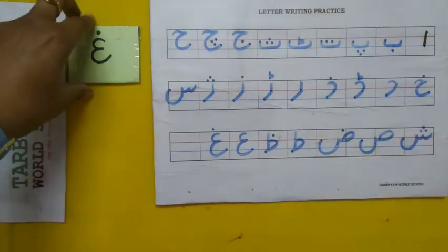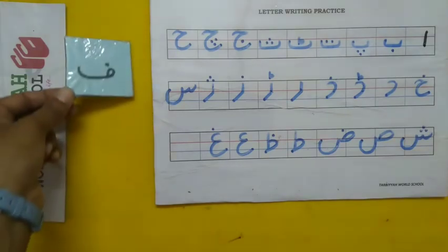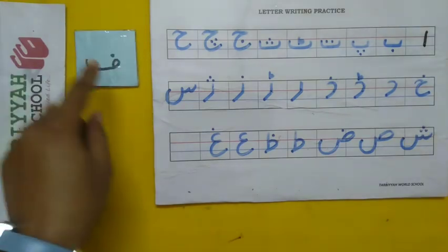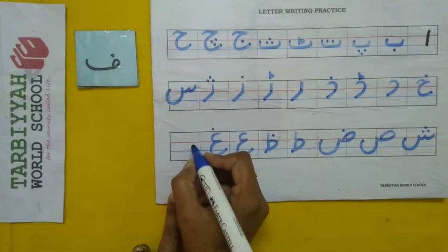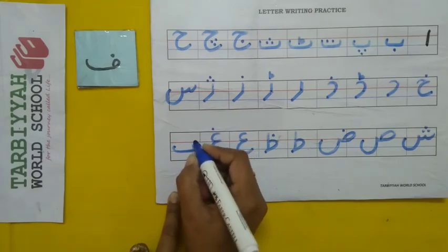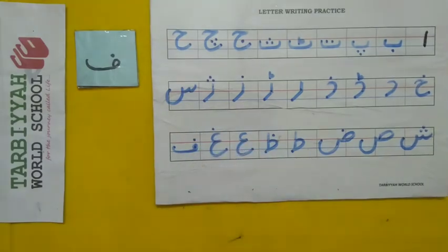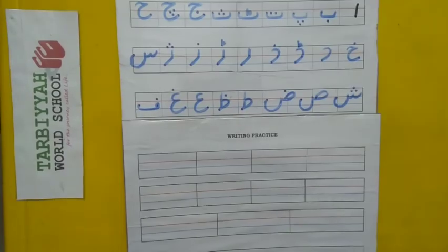Then after Gain — which letter? Yes, Fe. So how do we write Fe? One small circle, the sleeping line, and one curve like this. Fe has one dot on top. Like this — Fe.